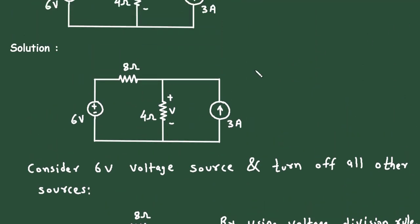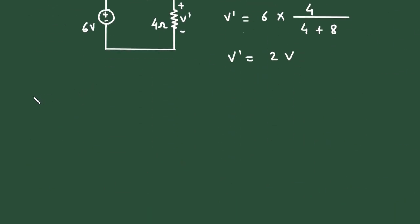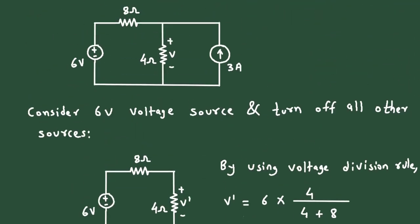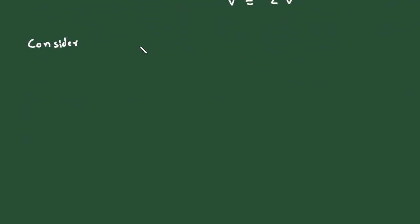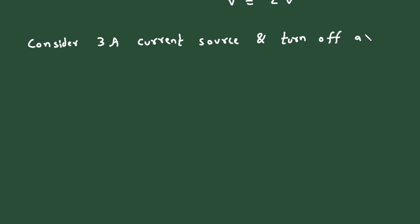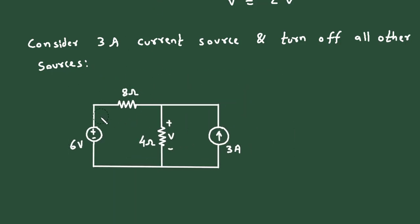The next step is to consider the 3 ampere current source and turn off all other sources. When we turn off the voltage source, it gets short circuited.